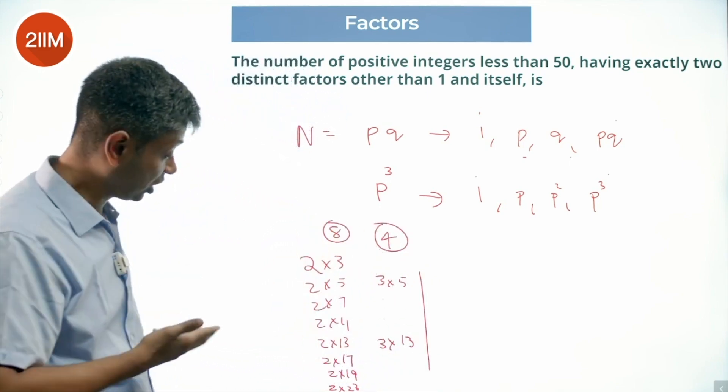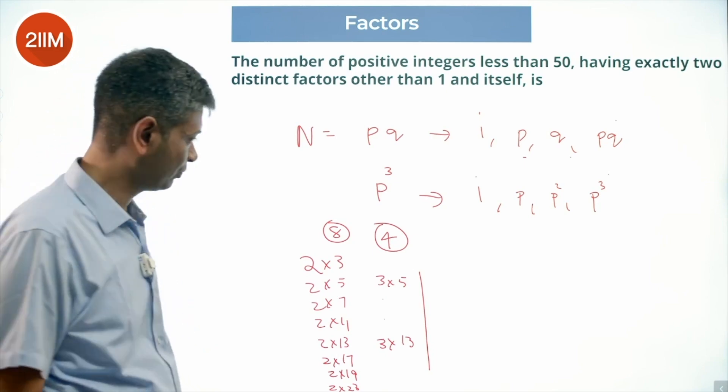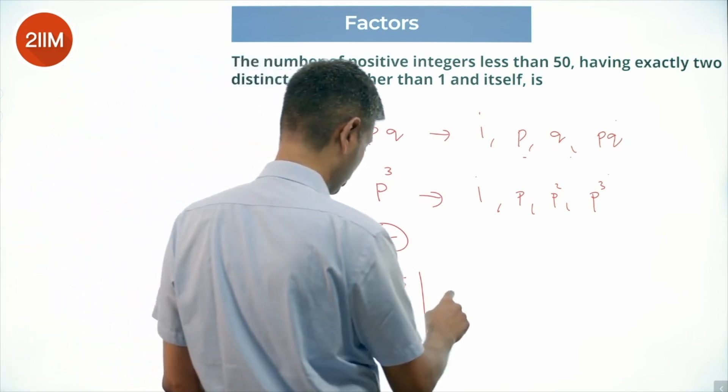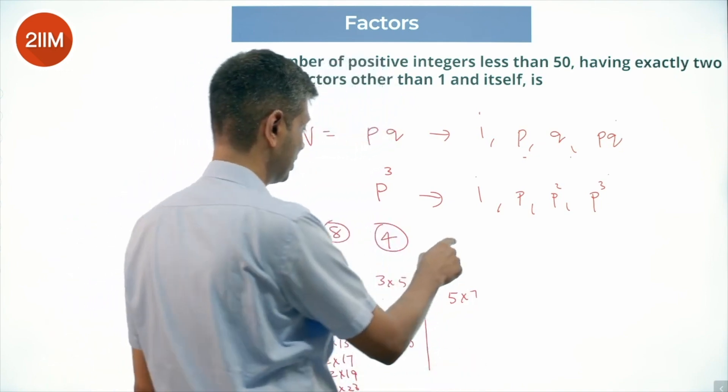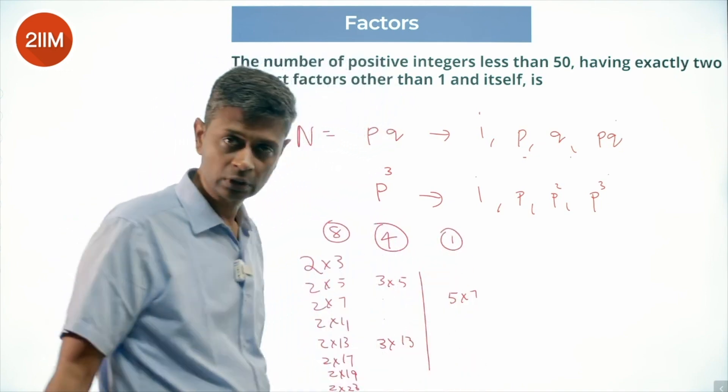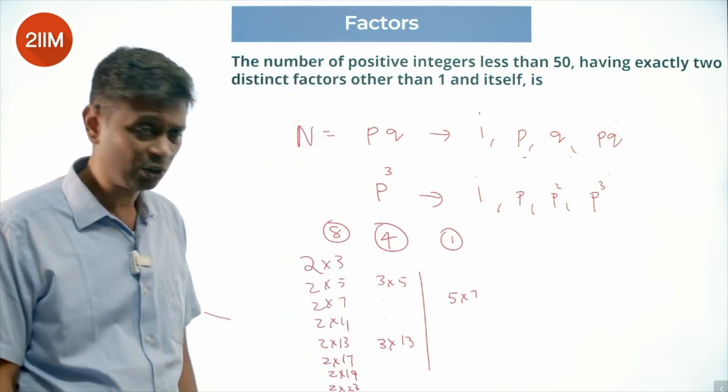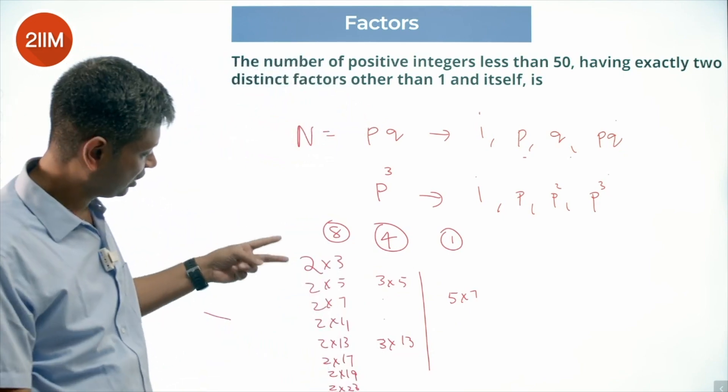Here 3×17 is 51, I don't worry about it. After this we have 5×7 equals 35, and 5×11 will become more—one number here. I don't have to worry about 7×11, that's way above 50, so 6, 10, 14, 22.